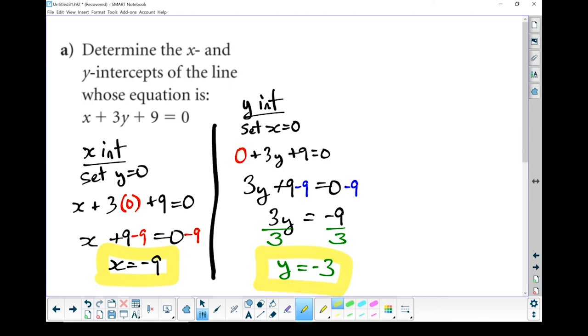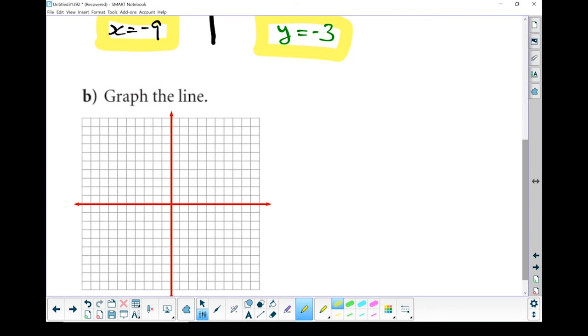Let's go transfer that to the graph. I can see my numbers, so I don't have to rewrite them. X equals minus 9. Remember, this is my x-axis. That's my y-axis. X equals minus 9 should be right there.